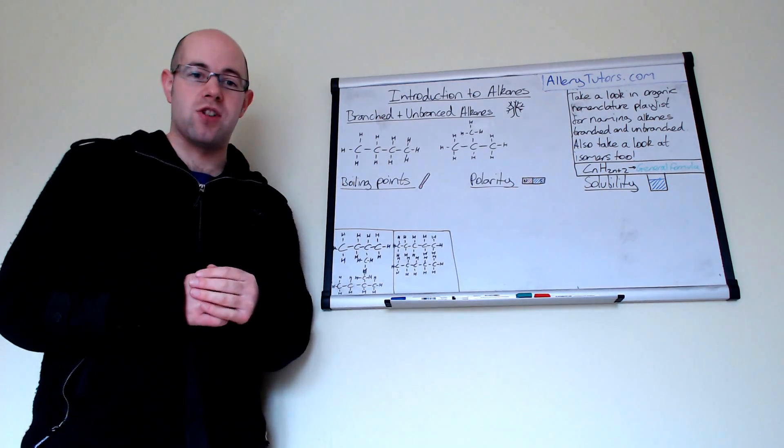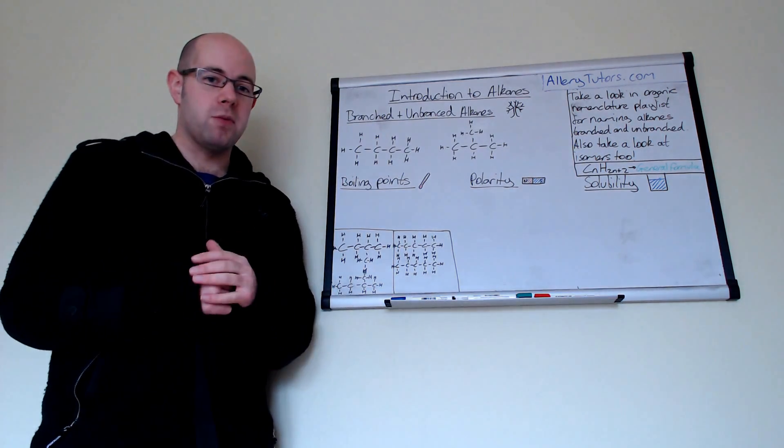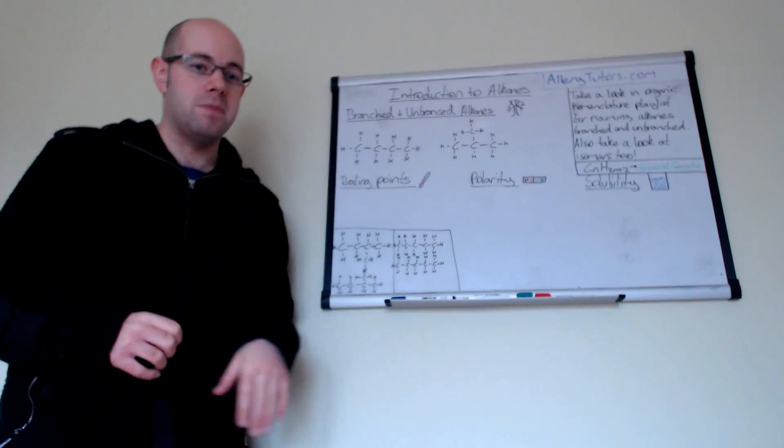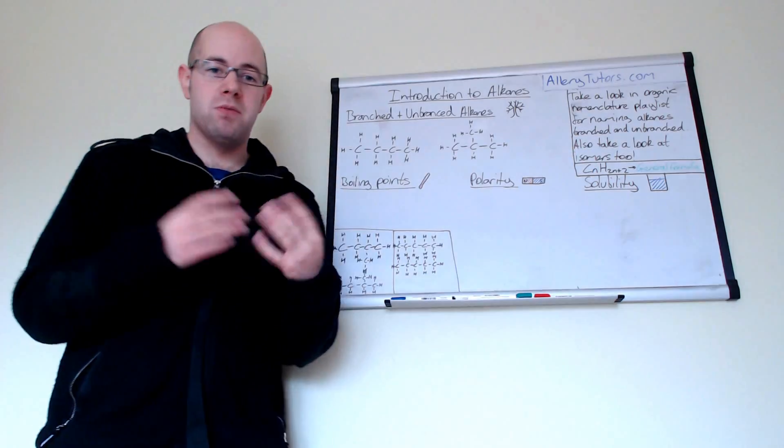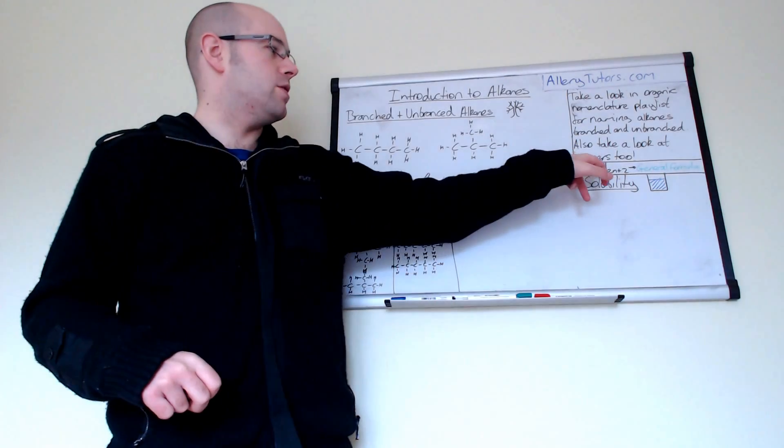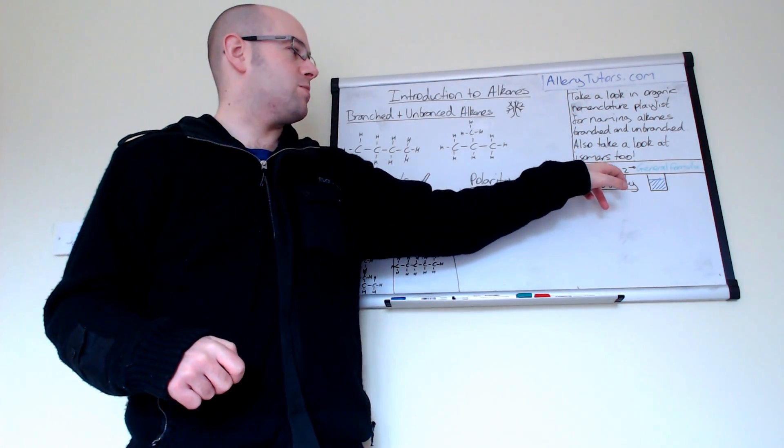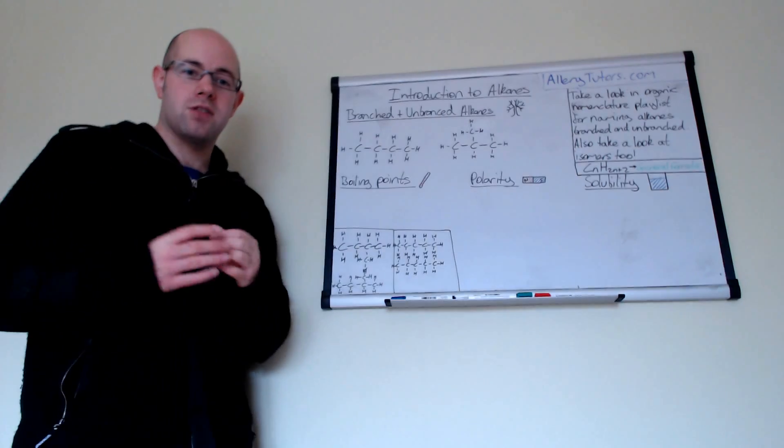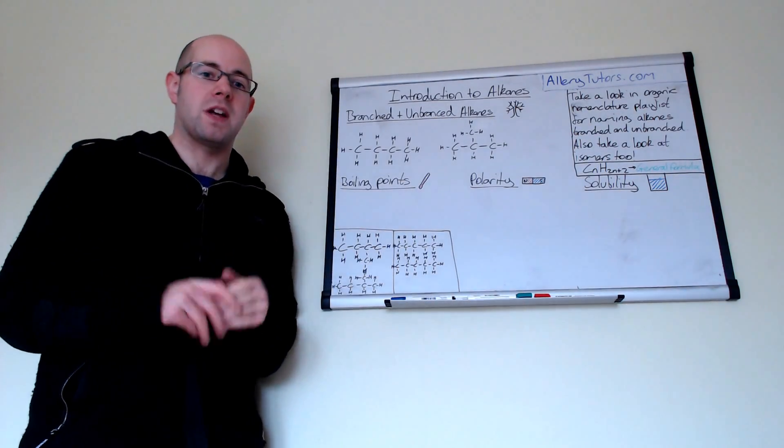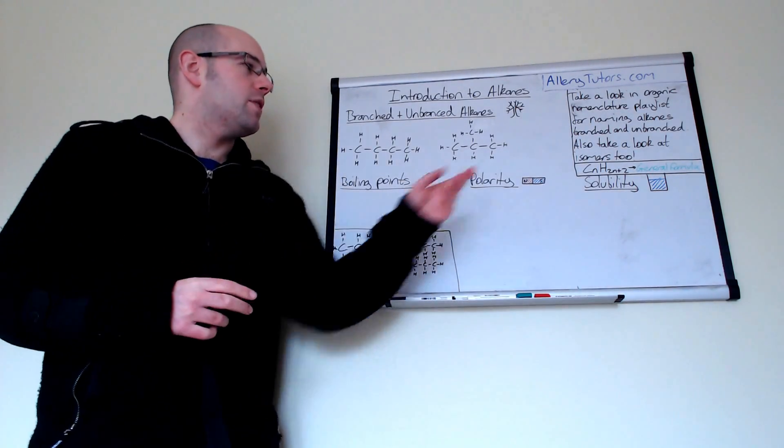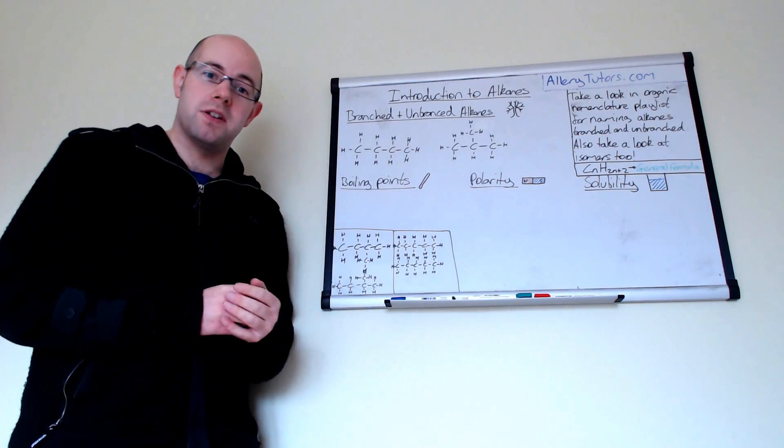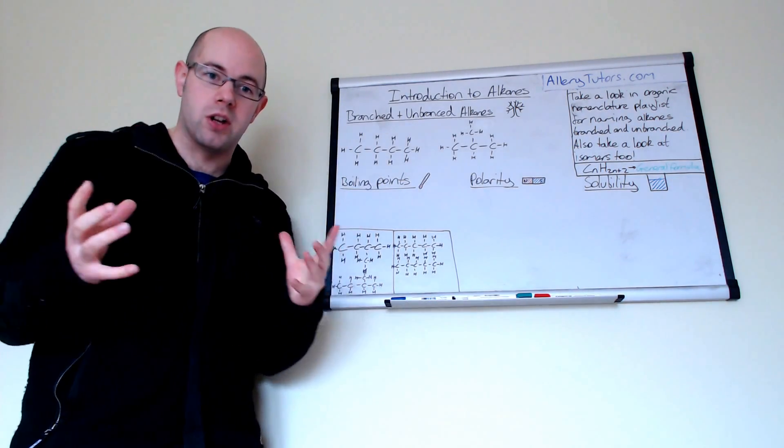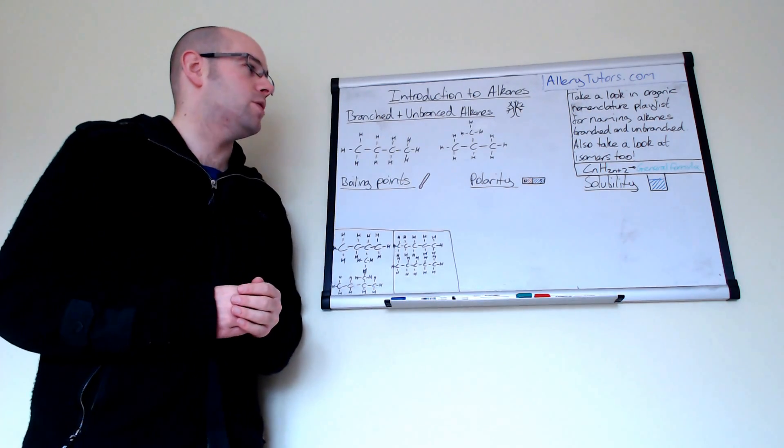So the best place probably to start is the general formula. The general formula of alkane is CnH2n plus 2 and that basically means that if n had a value of 2, say for example, then the number of hydrogens would be 2 times 2 which is 4 plus 2 which is 6. So a hydrocarbon or an alkane with 2 carbons would have 6 hydrogens on there. They're described as saturated molecules as well which means that there's no double bonds in there.